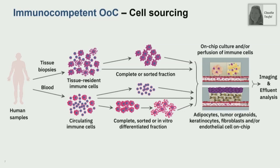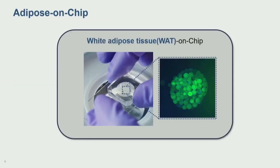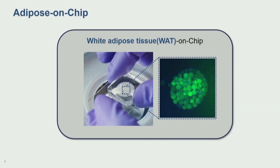I'm going to start with the adipose-on-chip system. In our adipose system we follow exactly the approach I just described. Adipose tissue is an extremely complex system — many people don't regard adipose as an organ, but in my view it may be one of the most important organs. It consists of adipocytes on one hand, but also a lot of immune cells, stromal cells, and stromal vascular fractions. And obviously you also have circulating immune cells from the vasculature.